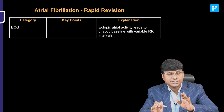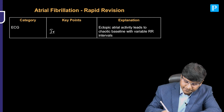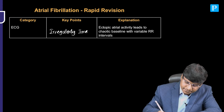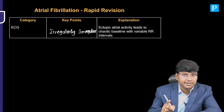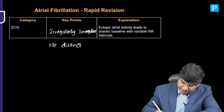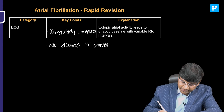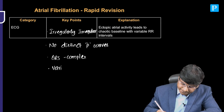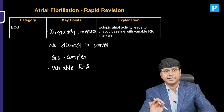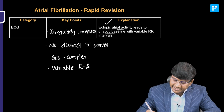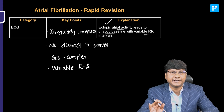The ECG will show you, first and foremost, an irregularly irregular rhythm. There are no distinct P waves. The QRS complex will be normal, but you will have a variable RR interval. These are the ECG changes — ectopic atrial activity leads to a chaotic baseline with variable RR interval. That will be the ECG findings in patients with AF.